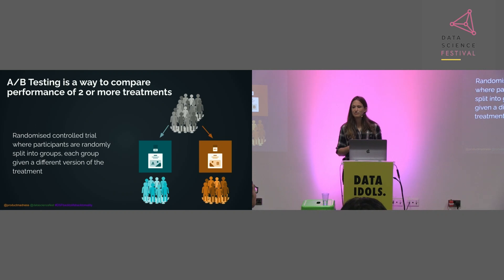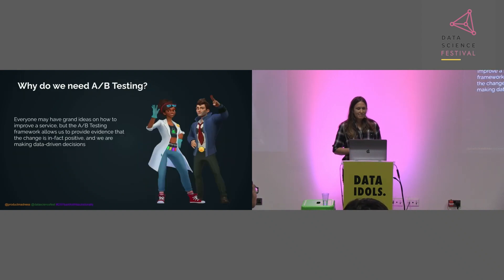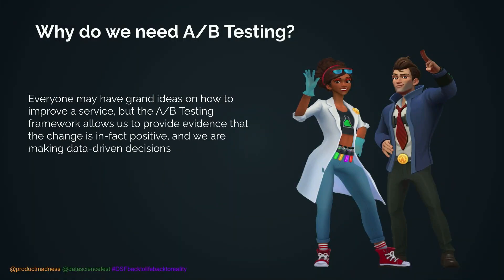This can extend to having features on and off, and different adjustments within a feature. Everybody has grand ideas of how they want to improve the service — they might be convinced the blue button is much preferred over the orange — but we actually want evidence. A/B testing allows us a way to provide this evidence so all of our decisions can be data-driven decisions.